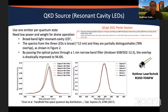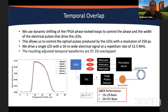The first most important subsystem is our actual QKD source. We partnered with collaborators at Ohio State University to develop a resonant cavity-based QKD source, using three different resonant cavity LEDs. It uses the right and left circular basis of polarization for encoding our QKD states, and the HV basis for error checking. You need really good spectral and temporal overlap to reduce side channel attacks. We were able to achieve a 12.5 MHz repetition rate with a QBER performance of 1% in the left-right basis and 2% in the HV basis.